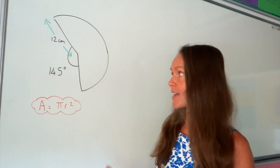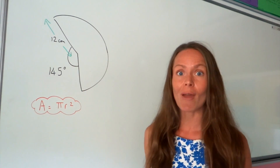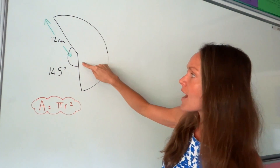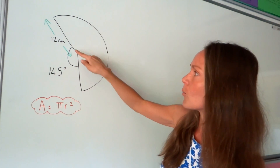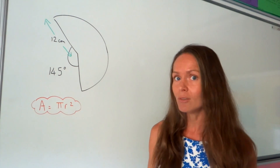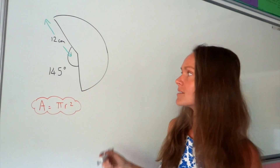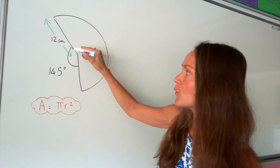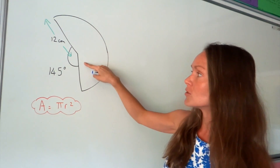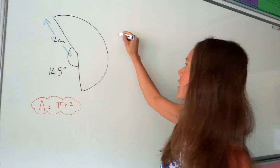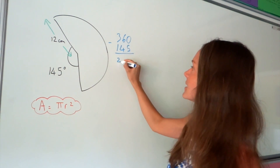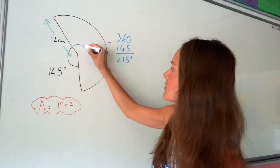To work out the area of a sector we need to know how many degrees are inside that sector. At the moment we only know there are 145 degrees outside the sector. We also know that in a full circle there are 360 degrees, so if I subtract 145 from 360 it will leave me with the number of degrees inside the sector. So 360 degrees minus 145 degrees is 215 degrees.